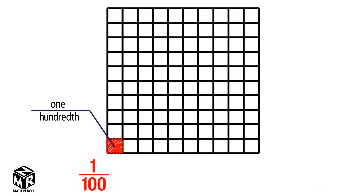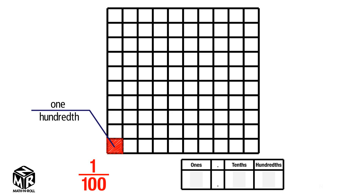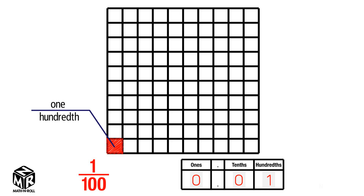We can also write it as a decimal using the place value chart. We put a 0 in the ones column, a 0 in the tenths column, and a 1 in the hundredths column. So one hundredth can be written in two ways: as a fraction and as a decimal.